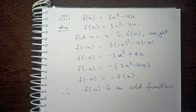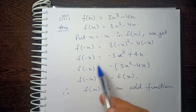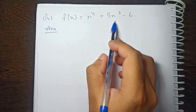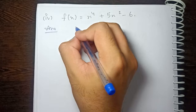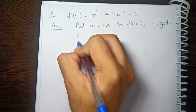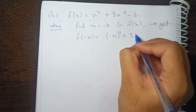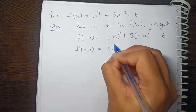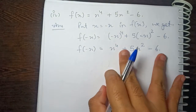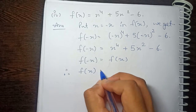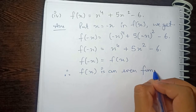Because putting in a negative value gives us a negative value — that's how we identify an odd function. Now the last part: f(x) = x⁴ + 5x² - 6. We put x = -x in f(x) and get f(-x) = (-x)⁴ + 5(-x)² - 6. Since all powers are even, the answers will be positive: x⁴ + 5x² - 6, which is exactly equal to f(x). So f(-x) = f(x), therefore f(x) is an even function.